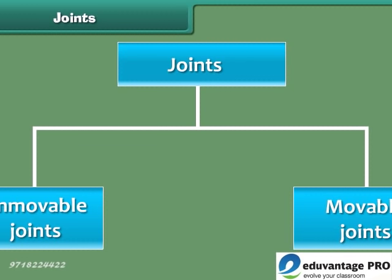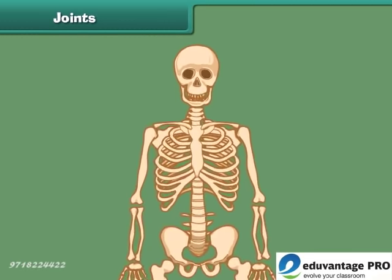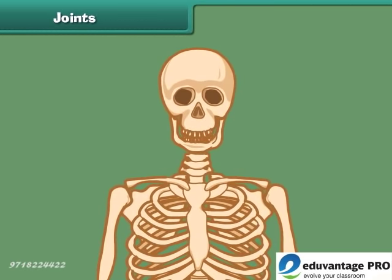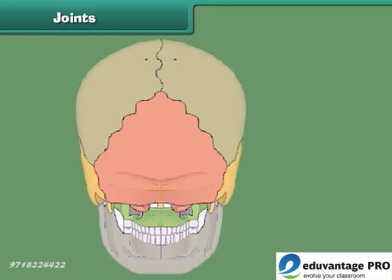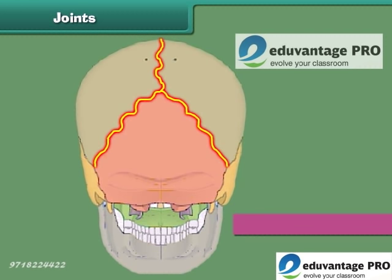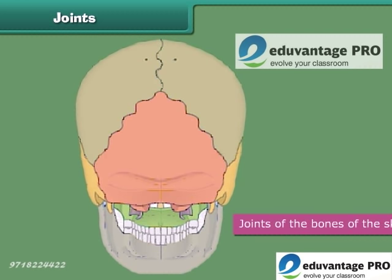Let us first discuss what immovable joints are. Immovable joints are the joints where no movement of the bones is possible. The joints of the bones of the skull are immovable joints.